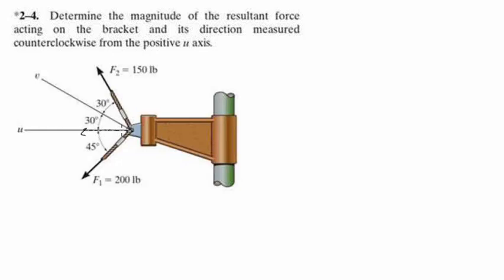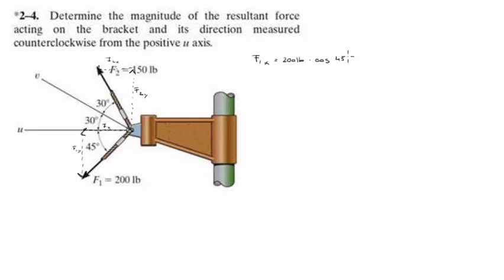F1 has an x and a y component — F1x and F1y. F1x is equal to 200 pounds times the cosine of 45 degrees. F1y is 200 pounds times the sine of 45 degrees.